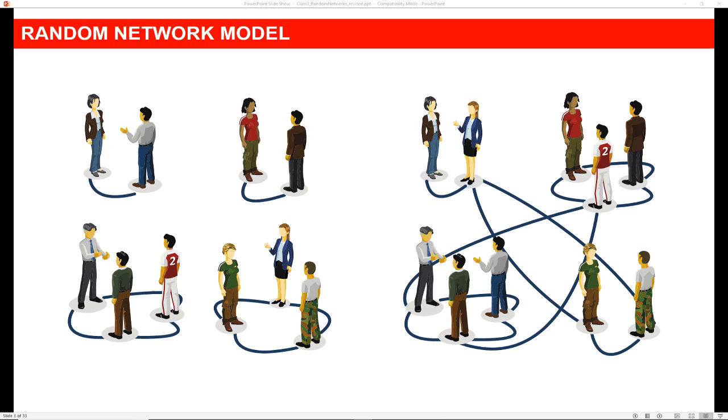Barabási presents an example of how a random network might behave in the start of the textbook chapter. Suppose you're at a party and there's people mingling. People are in random groups and are randomly going from group to group. There happen to be two bottles of wine, one that is very cheap and doesn't taste very good, and the other one's very expensive and is very palatable.